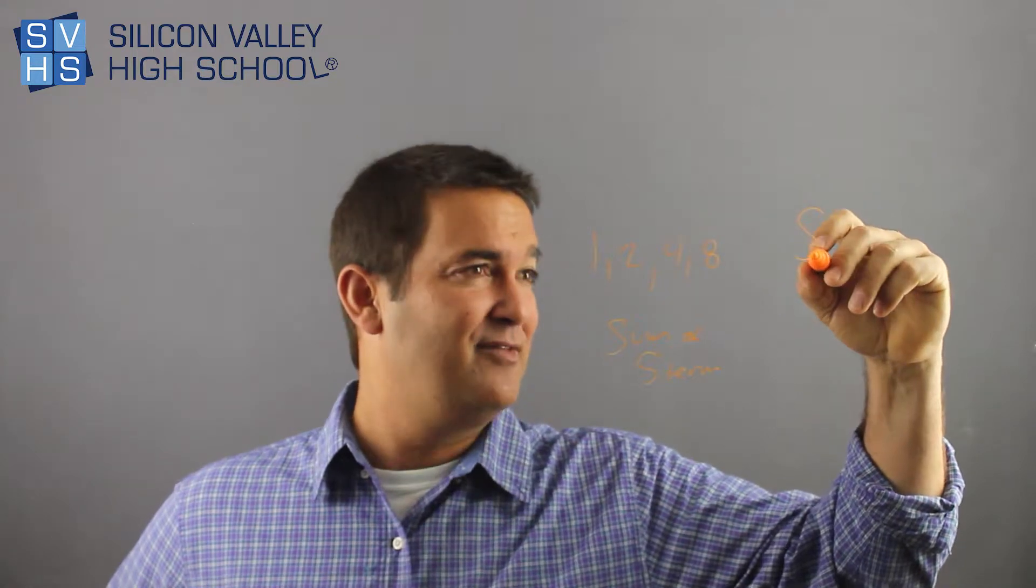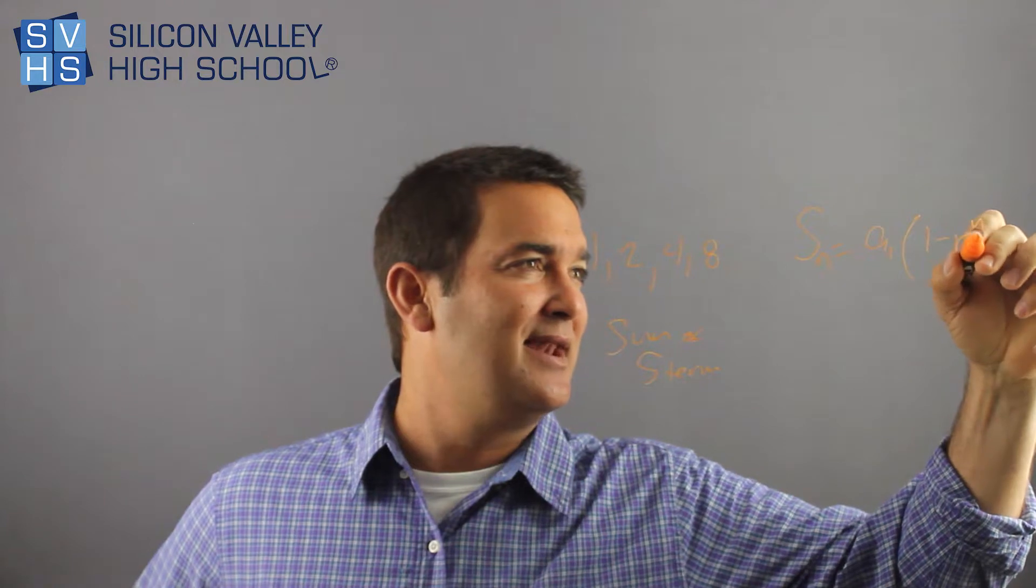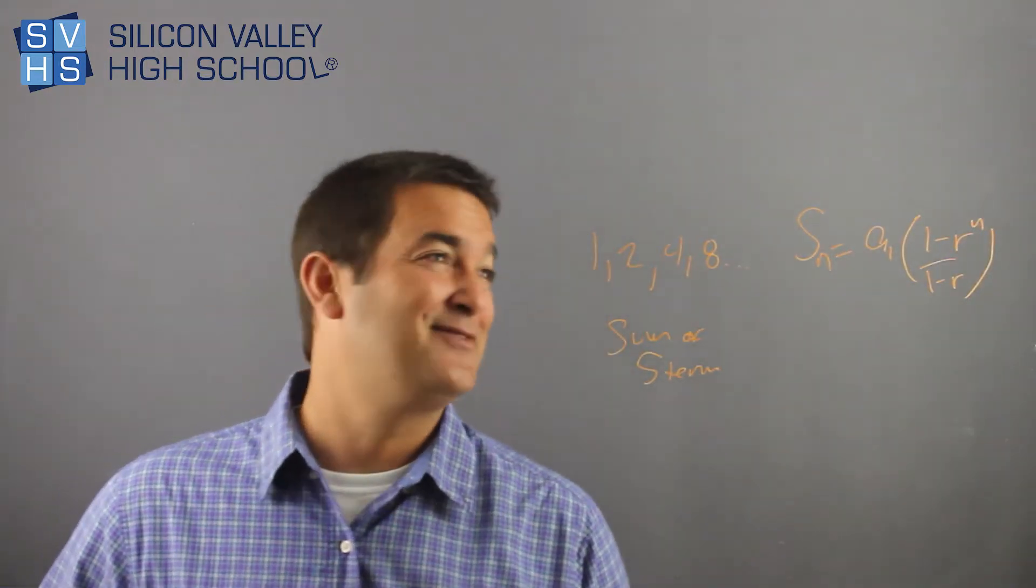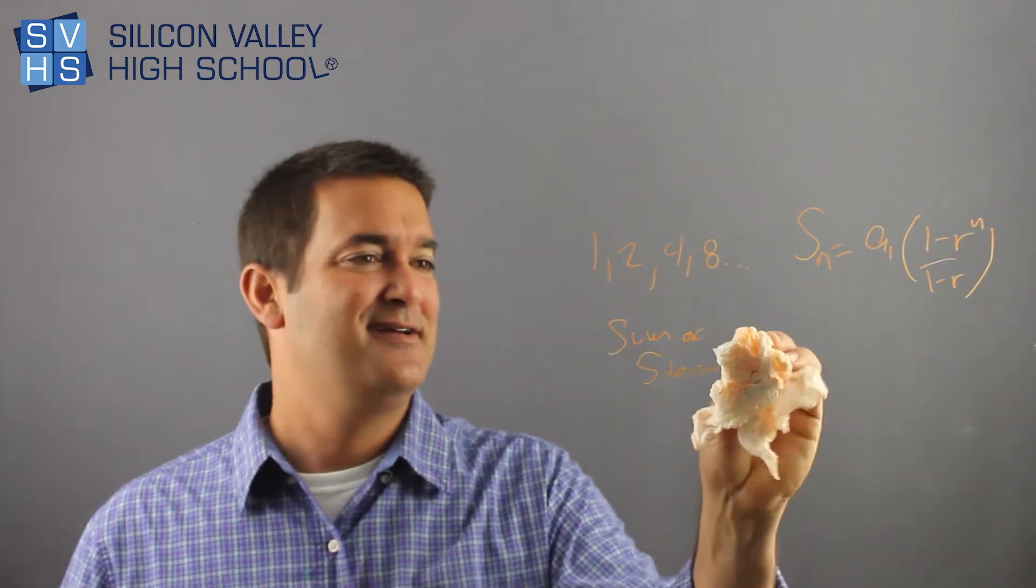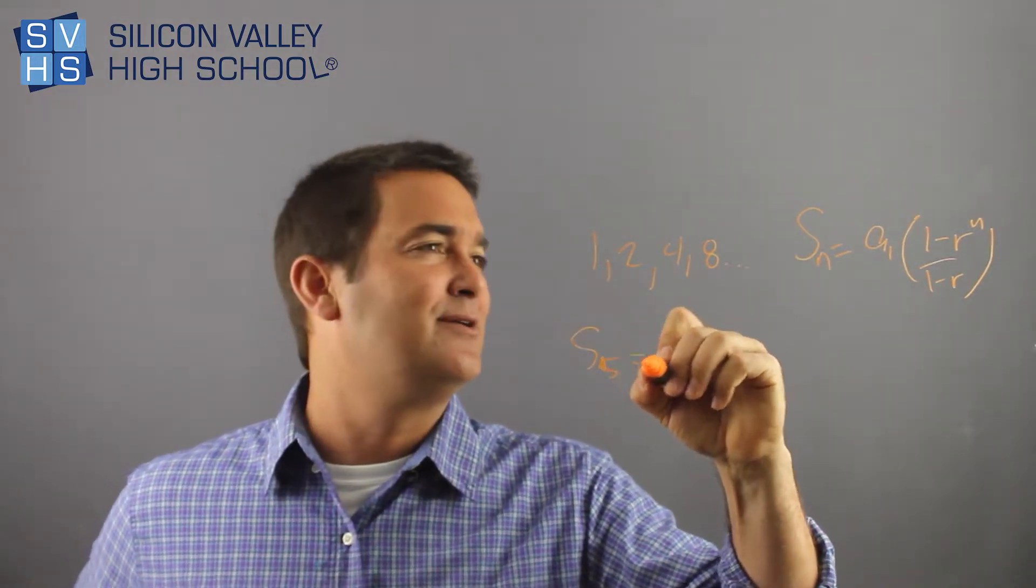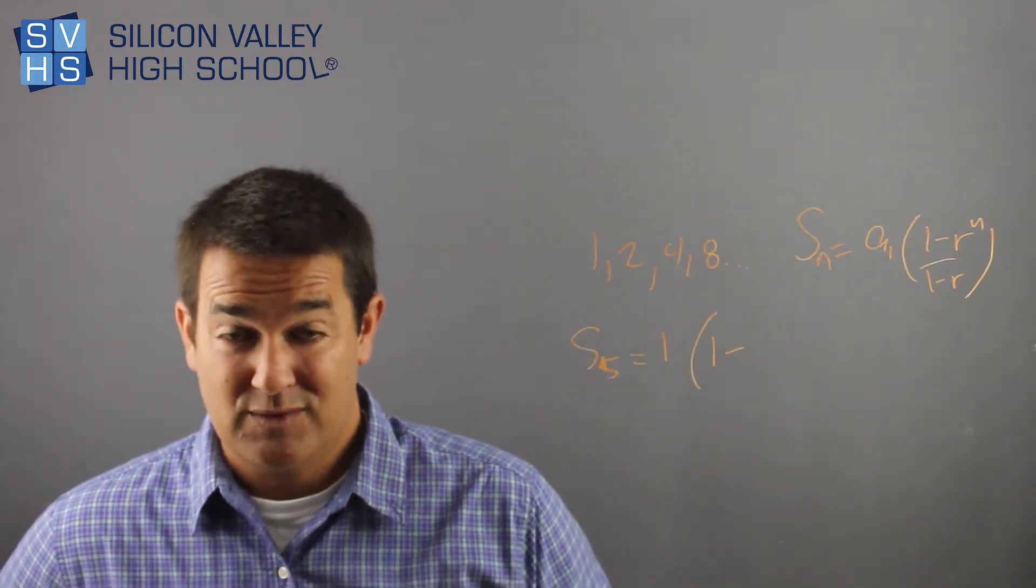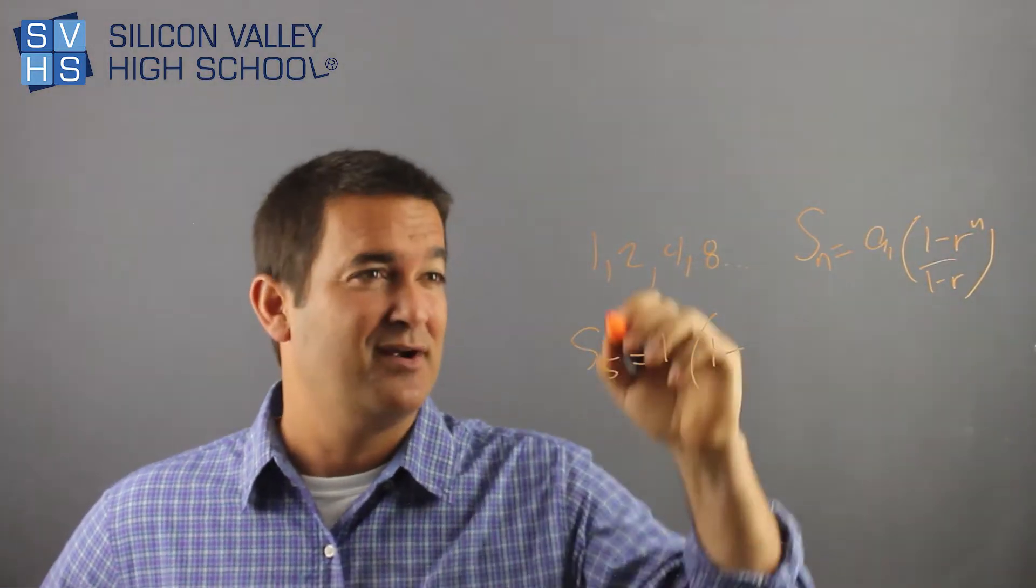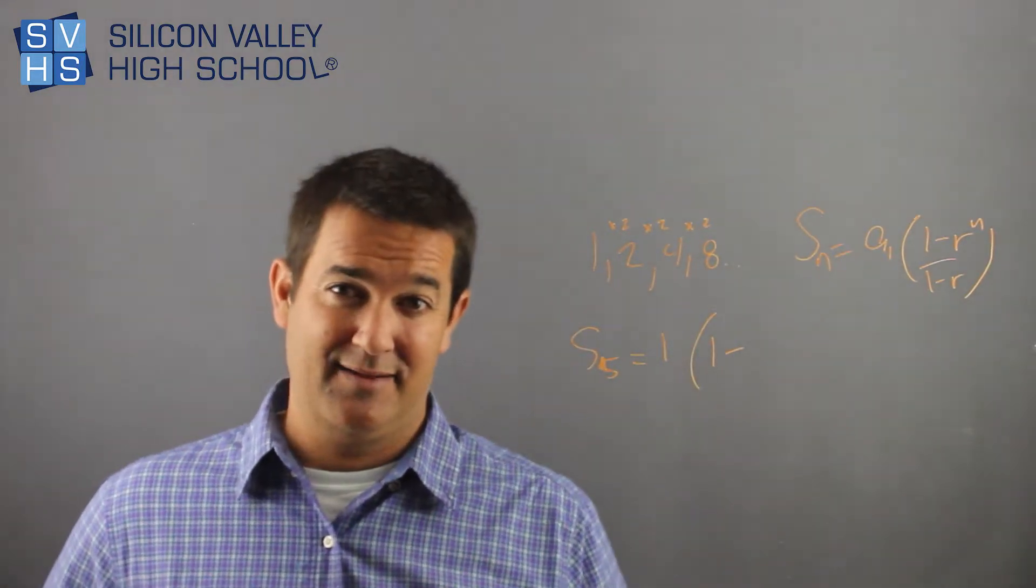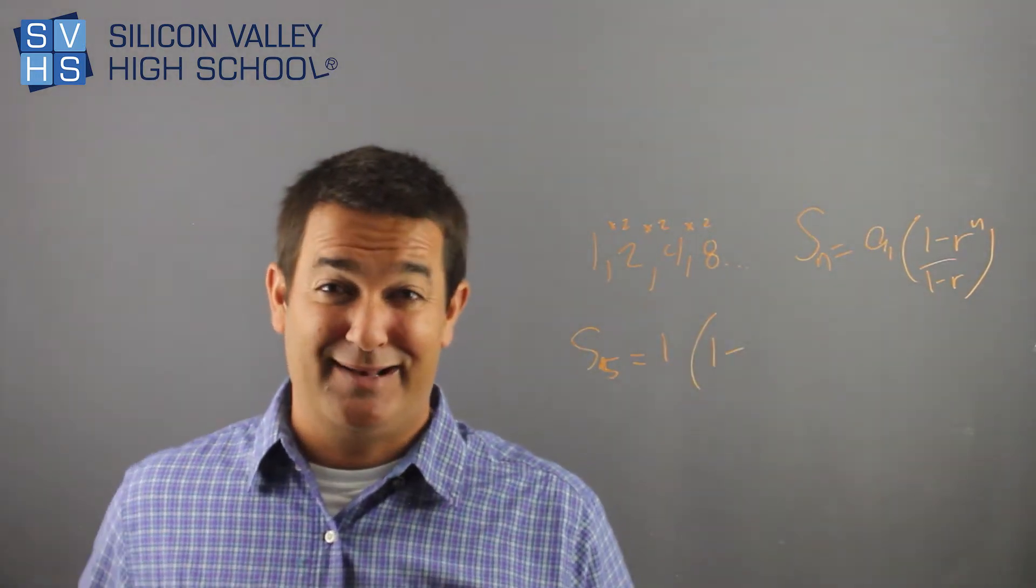So this would be sum of the first n terms equals a to the 1, parentheses, 1 minus r to the n over 1 minus r. That's weird. Let's see if we can figure this sucker out. So over here, we said sum of the first 5 terms. Sum of the first 5 terms equals a to the 1, in this case is 1, times 1 minus, what is r? What's my common ratio? What is r? It looks to me like, again, it's times 2, times 2. Sometimes r is weird, like 2 fifths. Sometimes r is negative 11, whatever. I'm keeping it simple because that's how I like to roll.